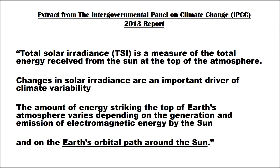The IPCC states that changes in the solar irradiance are an important driver of climate variability. The causes of such changes are various. This video will focus on those changes caused by the Earth's complex orbital path around the Sun.